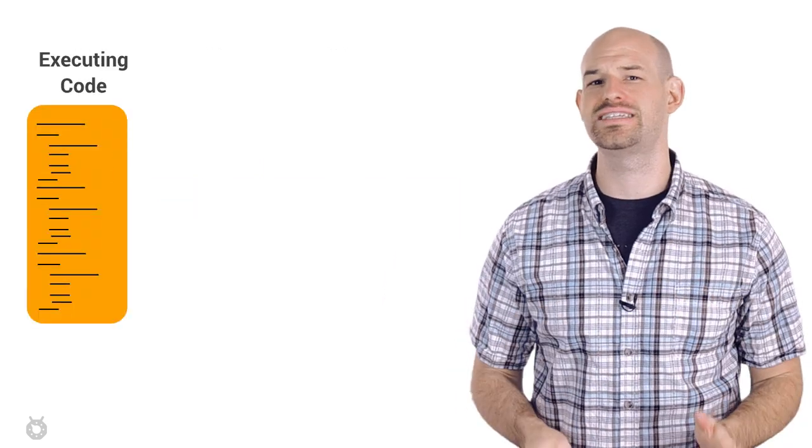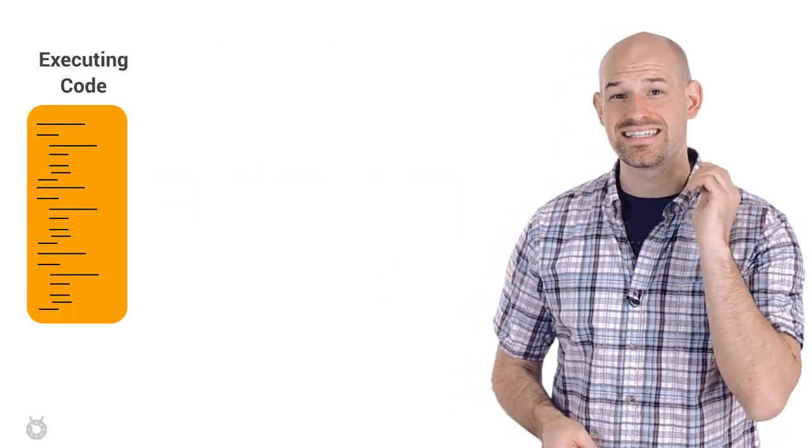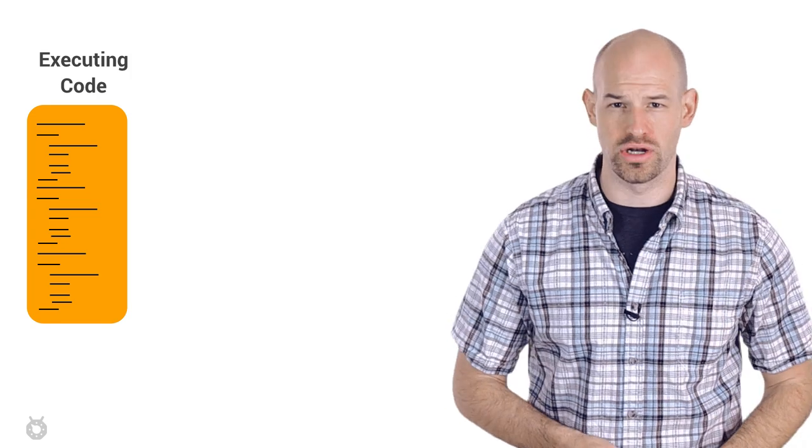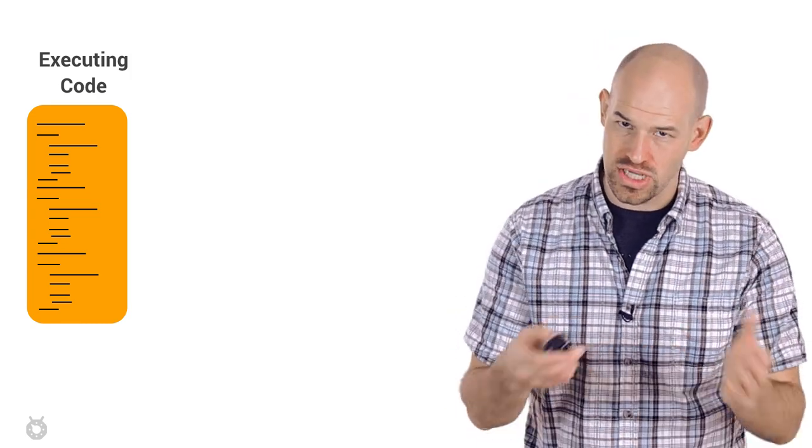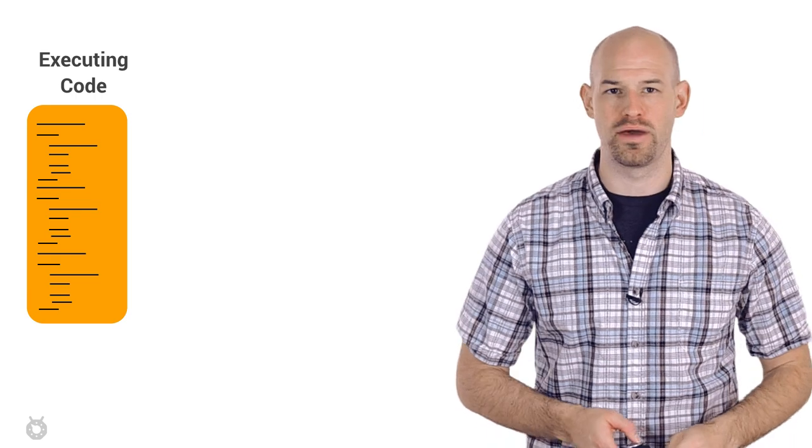Now, the number one cause of GC cascades like this is something called memory churn. Effectively, memory churn is when a high number of objects are allocated, and potentially freed, in a really small amount of time.